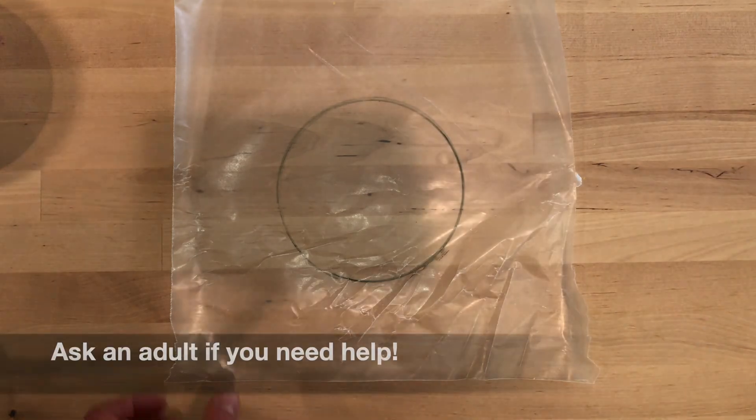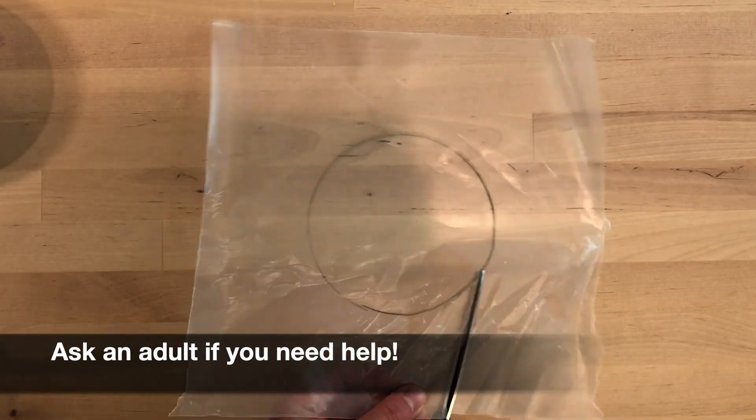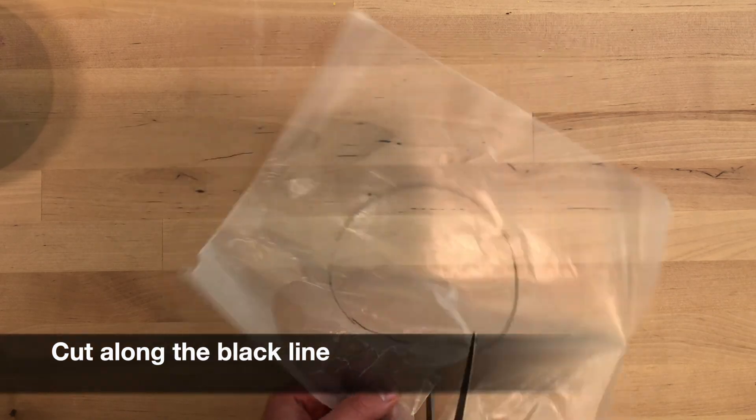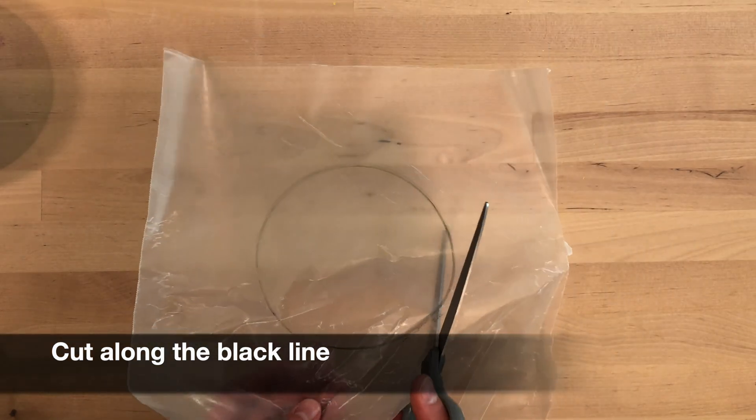Now it's time to get out our scissors. If you need help, please ask an adult. We're going to cut along the black line that we just created by tracing our bowl.